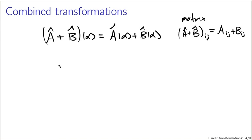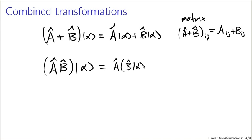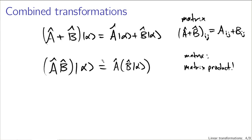We can also write the product of two transformations: A-hat B-hat acting on vector alpha can be thought of as the composition — A-hat acting on B-hat acting on alpha. In matrix representation, this is just the matrix-matrix product. You can work out all the sums necessary to verify this, and what you get is the summation expression for the matrix product. So we can compose transformations by multiplying their matrices, and apply a sum of transformations by adding the elements of their matrices.